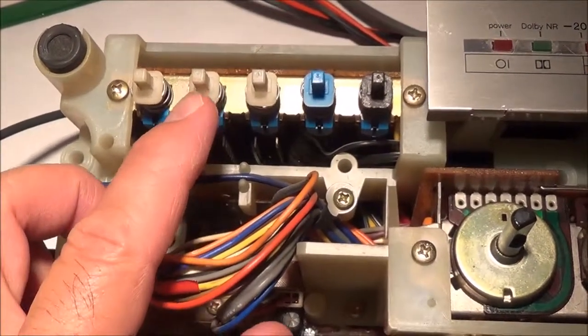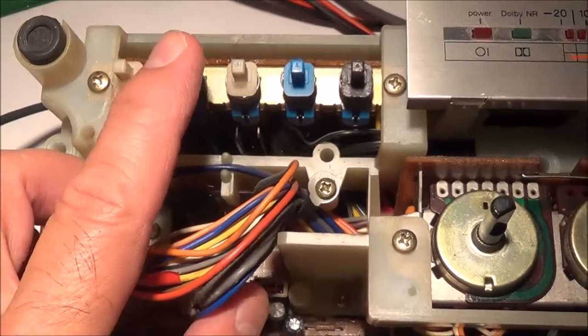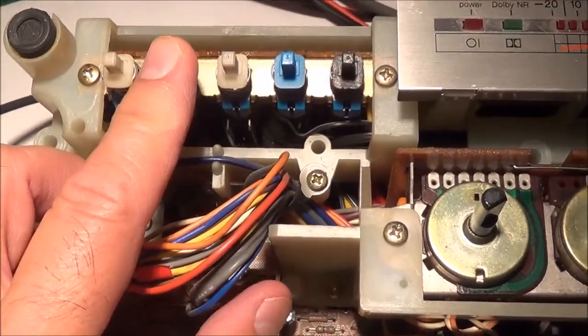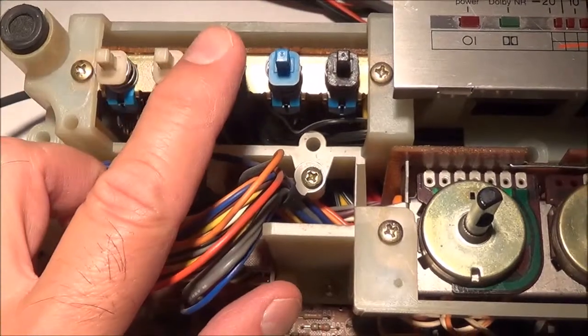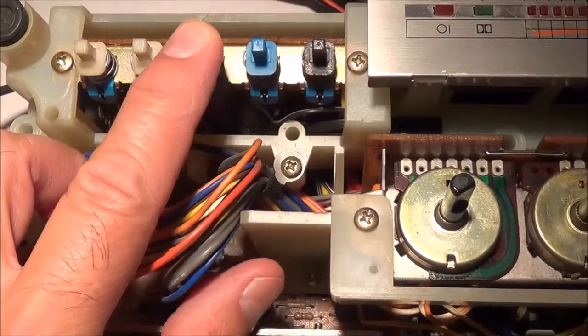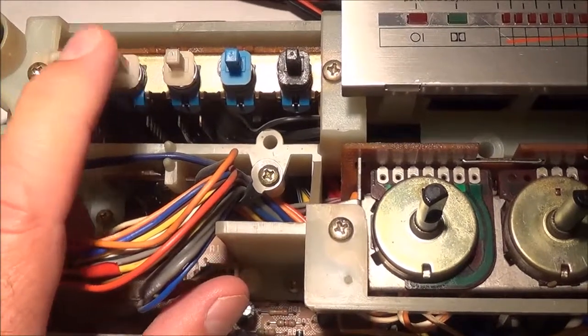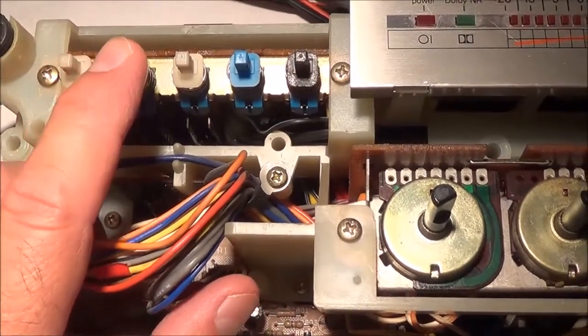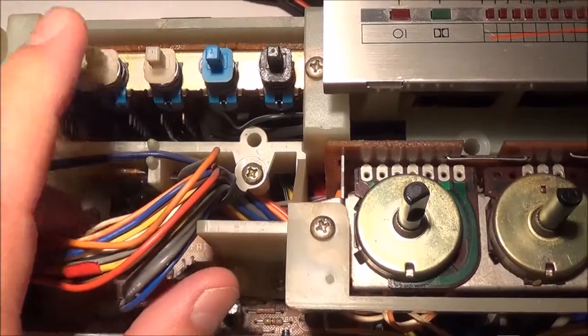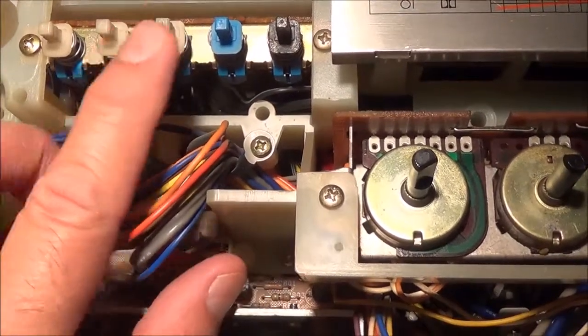The tape selector switch is in the normal position and the Dolby is off. This cassette player plays normal or metal tape, and both of those switches have to be in the off position.